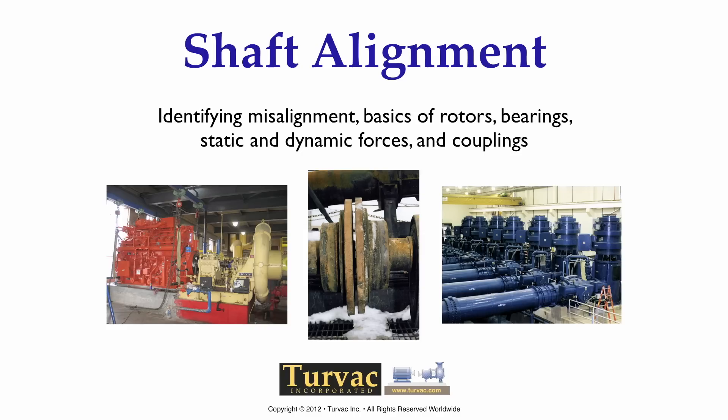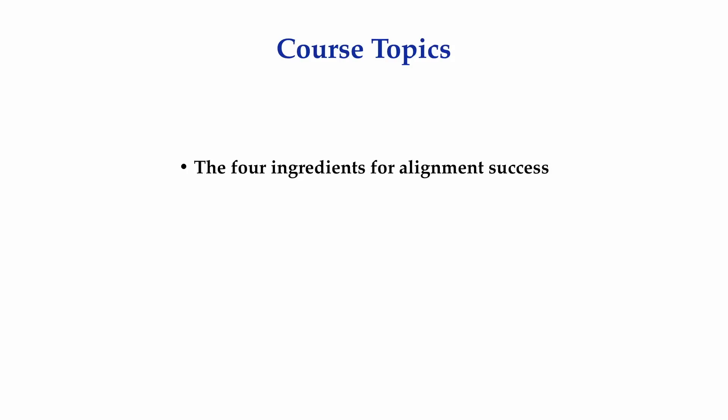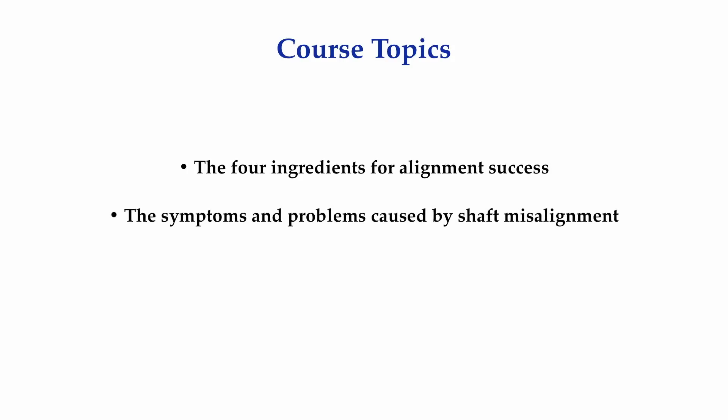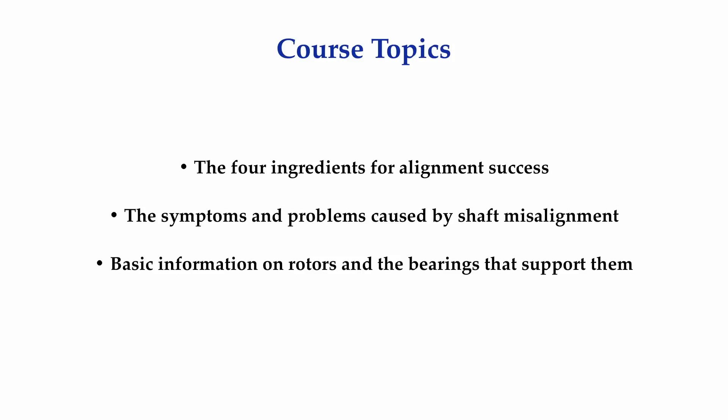It will cover some very basic but vitally important concepts that will hopefully provide a good understanding of how rotating machinery works, what mechanisms destroy our equipment, and what we can do to ensure long-term survivability of our machinery. The major topics covered include the four key ingredients to successfully align machinery, the symptoms of misalignment, basic design principles of rotating shafts and bearings, and the types of static and dynamic forces that occur in machinery.